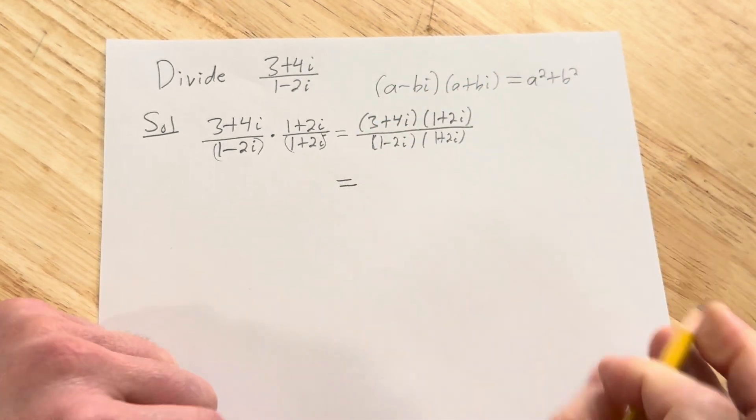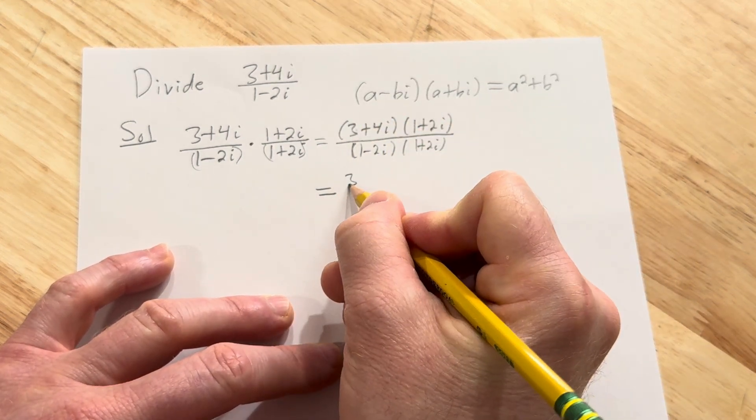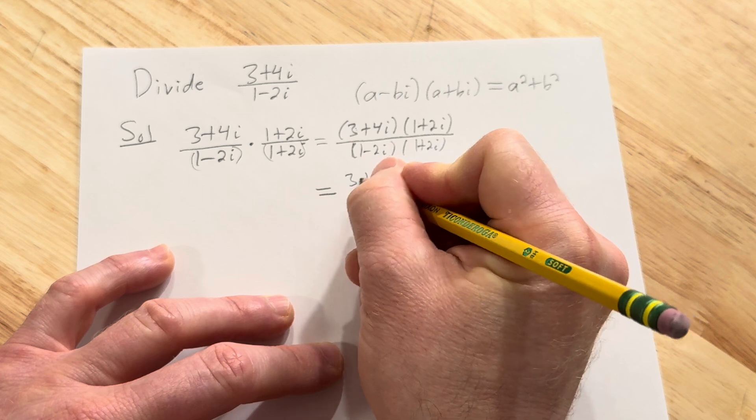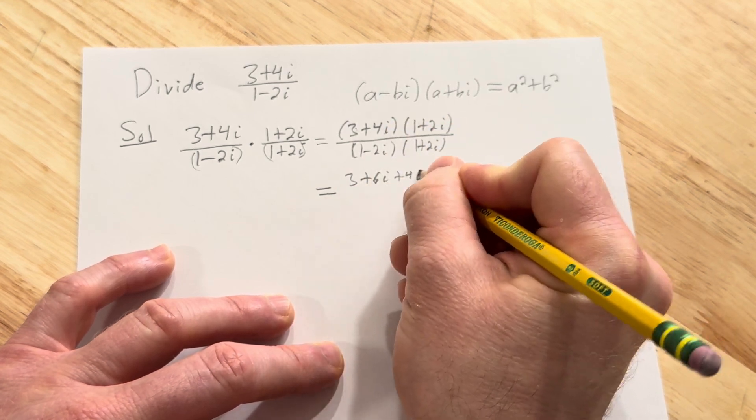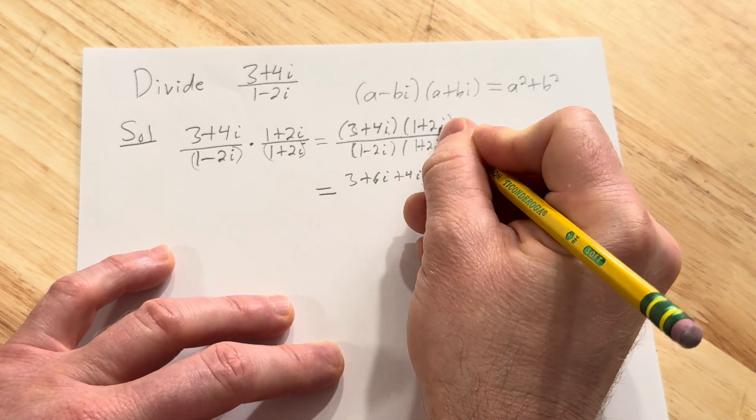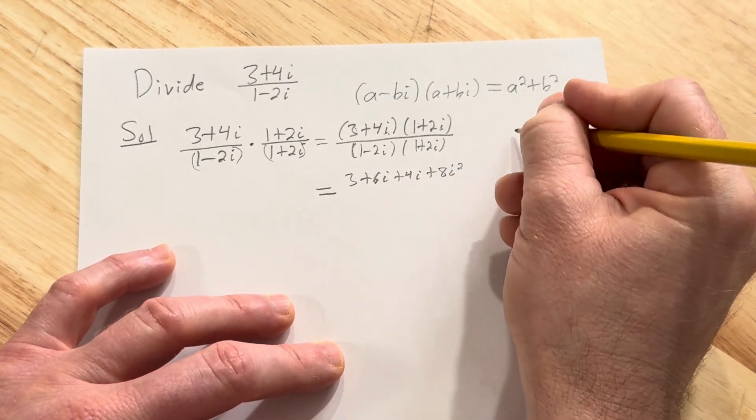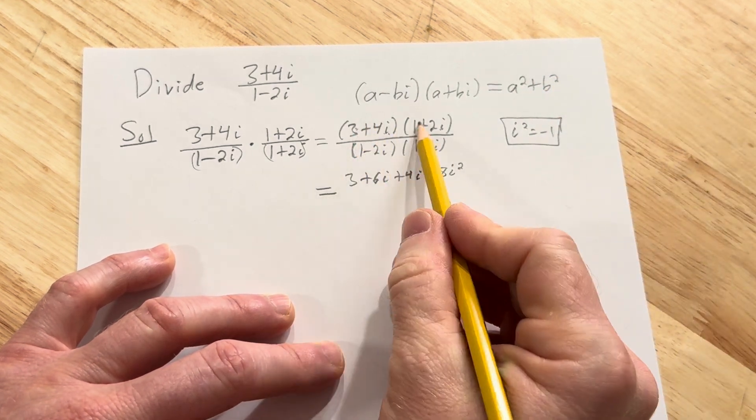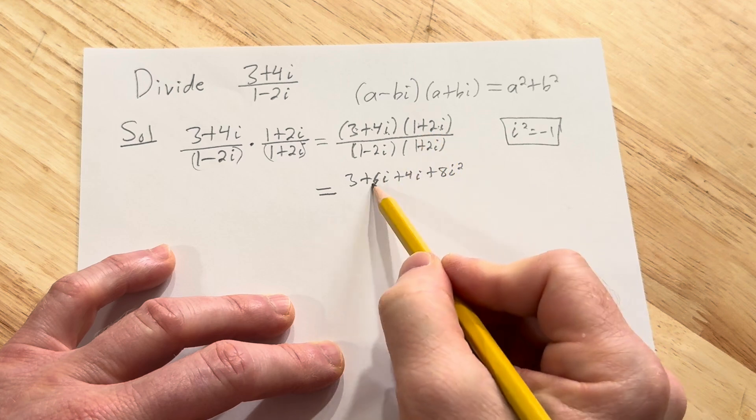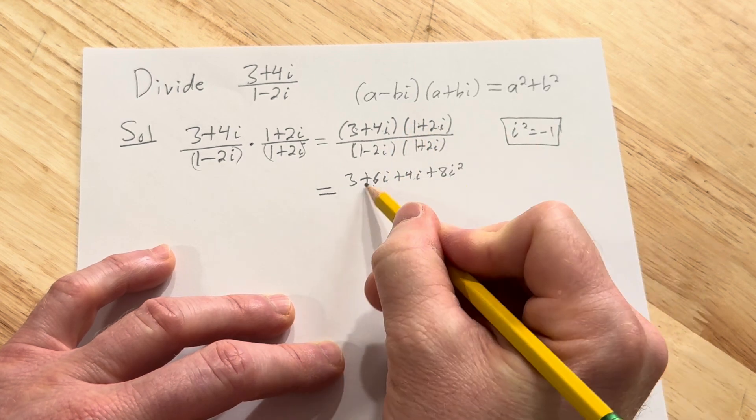This is equal to... Let's go ahead and distribute. So in the numerator it'll be 3 times 1 which is 3, and then 3 times 2i which is 6i, 4i times 1 which is 4i, 4i times 2i is 8i squared. And remember i squared is equal to negative 1.